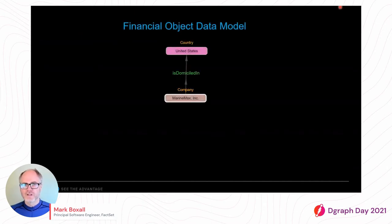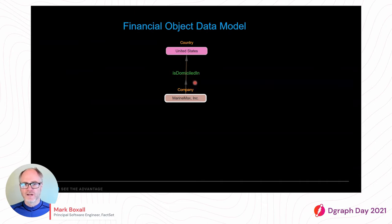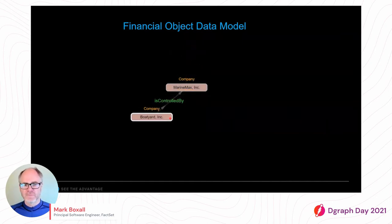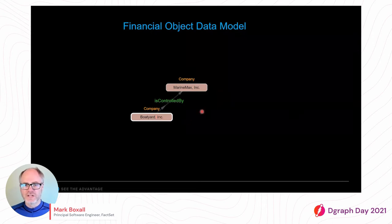Let's dive into the data model and start nice and simple. We have just two nodes here — a company and a country — connected with an edge called 'is domiciled in'. Domiciled is really just the home country for a company, so we can see that MarineMax is a US-based company. We also have a second company, Boatyard Inc., which is controlled by MarineMax, meaning MarineMax has 50% or more ownership and therefore controls it — another way of expressing that is it's a subsidiary. So Boatyard Inc. is a subsidiary of MarineMax Inc.